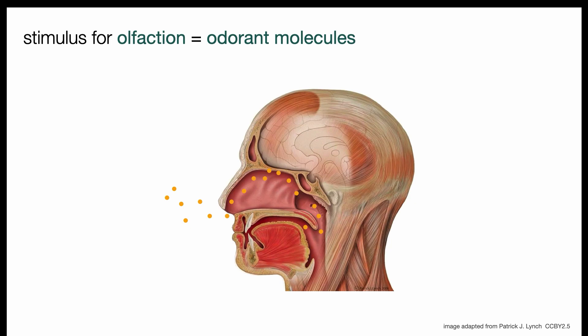The stimulus for smell, or olfaction, are odorant molecules that pass through the air and into the nose or that come up from the mouth through the nasal pharynx when we eat. These molecules reach the olfactory mucosa at the top of the nasal cavity, where they stimulate olfactory receptors and are transduced into neural impulses.